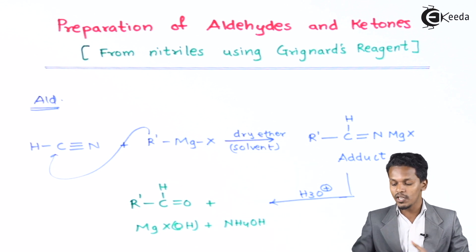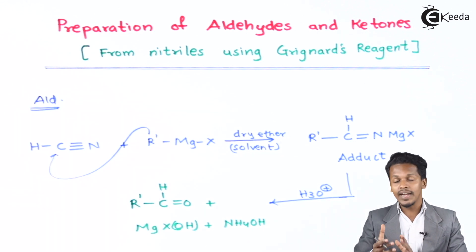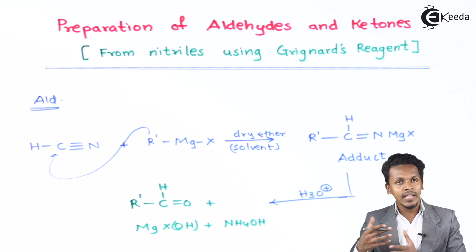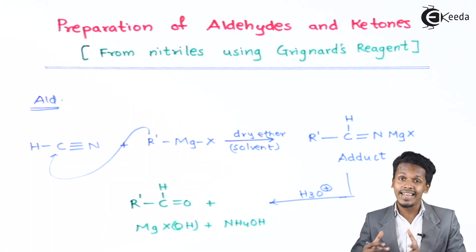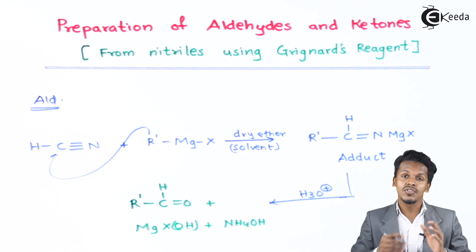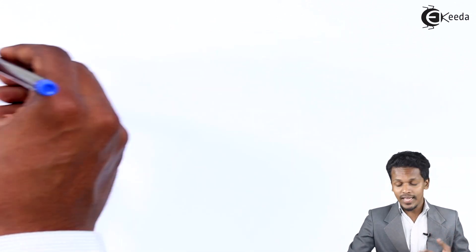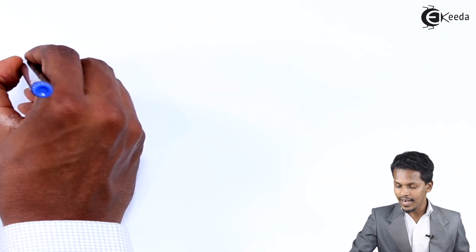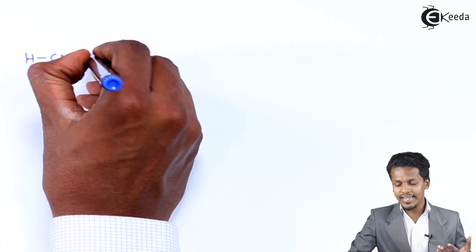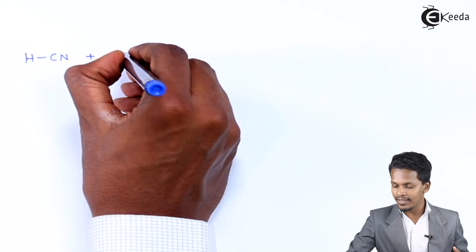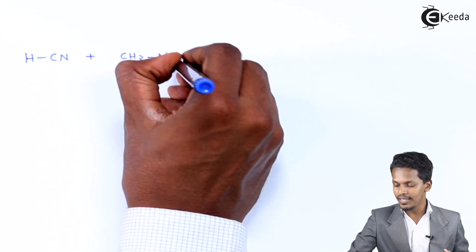So the main product obtained is an aldehyde. To prepare any aldehyde we must use hydrogen cyanide, and when it undergoes reaction with the Grignard reagent we obtain an aldehyde. Let me discuss an example: suppose we consider hydrogen cyanide reacting with a Grignard reagent.